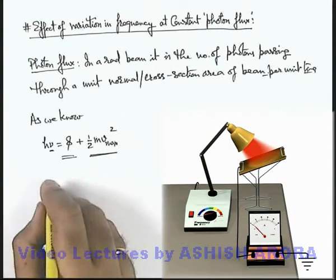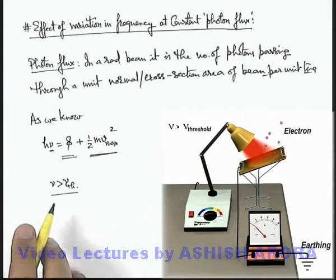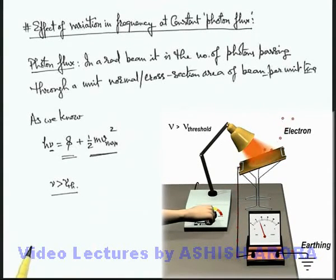And in this situation, if ν is more than ν₀ (threshold), then we can say electrons are being ejected out with some kinetic energy. Now if from the frequency control of the lamp we increase the frequency, you can see the color of light will start changing because if we are increasing frequency, its wavelength will start decreasing.